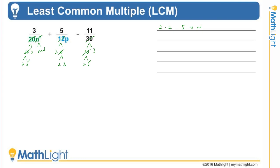The second number is 2 times 2 times 3 times p, and the third number is 2 times 3 times 5. So do you remember how to do the LCM, which is also the LCD of the denominators?